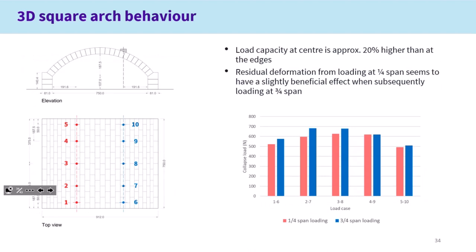After this first series, we tested the same arch at three-quarter span at the same locations. Some of the main findings are that the load capacity at the centre is approximately 20% higher than at the edge location — something observed at both three-quarter span and one-quarter span. Also, the residual deformation from the first loading at one-quarter span seems to have had a beneficial effect when loading at three-quarter span, so capacity was a little bit higher. But again, this is something we need to investigate further — these are just initial results.